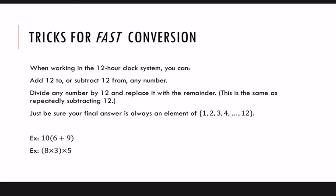And finally, let's conclude with some tricks for doing fast conversion in this 12-hour clock system. So here are some different things that you can do. When you're working with different arithmetic problems, you are allowed to add 12 to or subtract 12 from any number. And that's because 12 is the identity. It's not going to change the time just to add or subtract 12 from it.